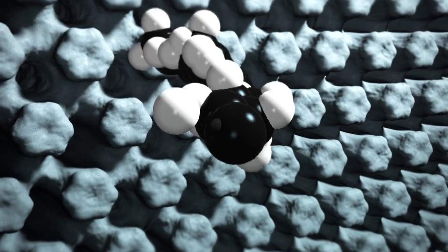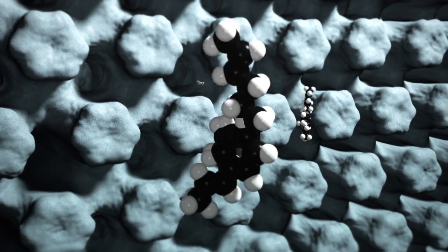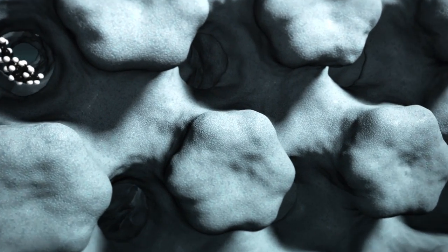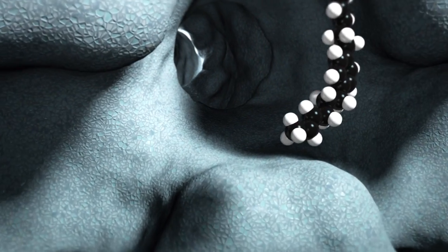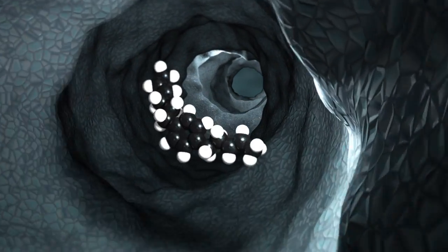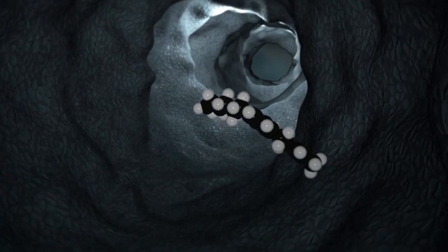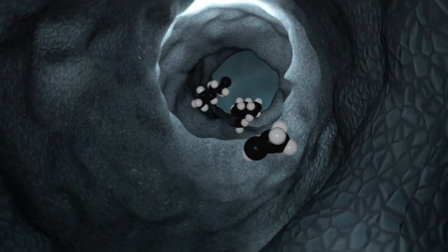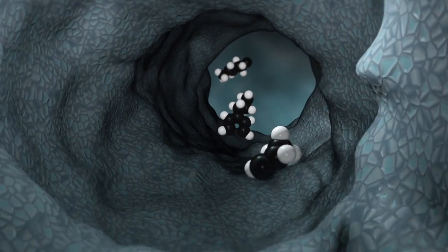In petroleum refining, for example, long hydrocarbon chains or feed molecules enter the zeolite crystal through the micropores and are channeled to the active sites inside the zeolite crystal. Once inside the zeolite, the long hydrocarbon chains are converted or cracked into smaller, more valuable product molecules, such as gasoline, diesel, and other products.